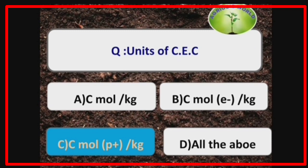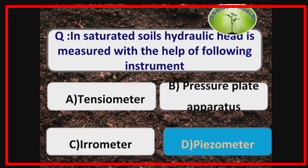Units of CEC (cation exchange capacity) is centimole of charge per kg. In saturated soils, hydraulic head is measured with the help of a piezometer.